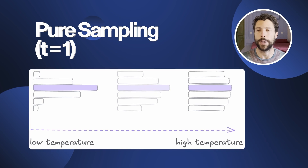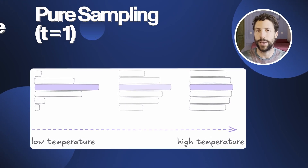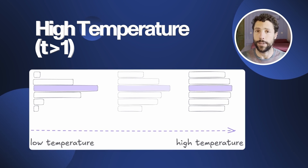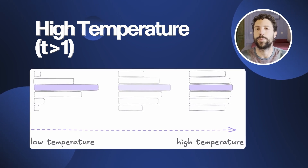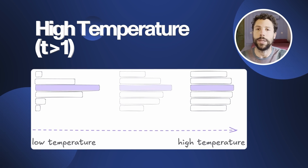Setting t = 1 leaves the original probability distribution unchanged — this is called pure sampling, where the model samples from the full vocabulary according to the prior distribution, with no tokens excluded. In the high temperature regime with t above 1, the probability distribution is flattened, increasing randomness and making it more likely to choose less probable tokens. As t increases toward very high values, the distribution approaches uniform, giving essentially a random word generator. Importantly, stochastic decoding strategies like TOP-K, TOP-P, and temperature sampling still fundamentally aim to maximize the likelihood of text sequences; the added randomness allows an LLM to explore different trajectories for a more natural, human-like experience.